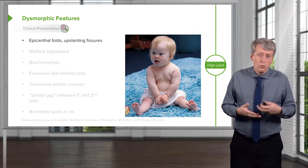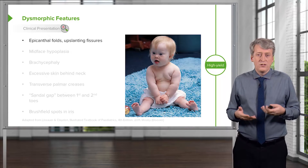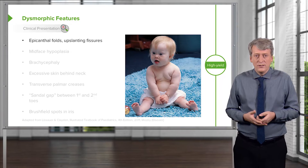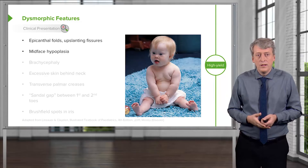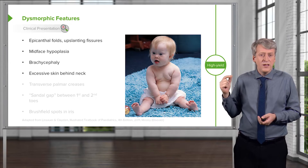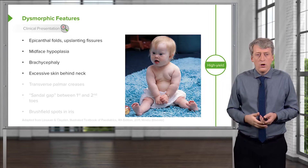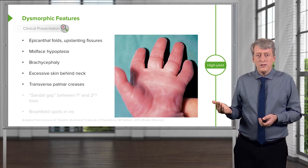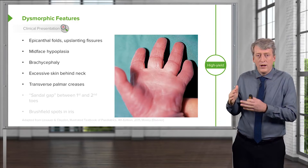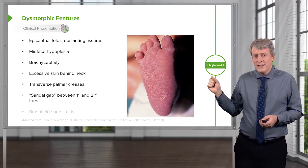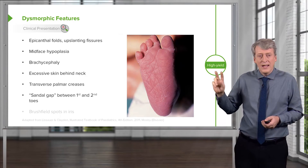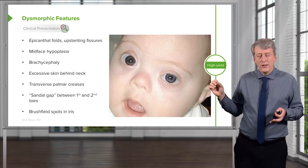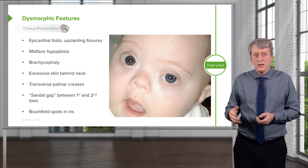If we have a baby and we're wondering whether they might have Down syndrome, this is a diagnosis frequently made on physical exam. Classic findings include epicanthal folds or upslanting palpebral fissures of the eyes, mid-face hypoplasia, brachycephaly, and excessive skin behind the neck — which can sometimes be seen on ultrasound in utero. You may also see a palmar crease going straight across the hand, a slight gap between the first and second toes, and small white spots in the iris called Brushfield spots.